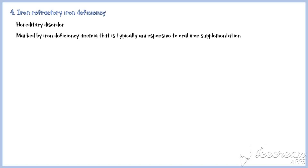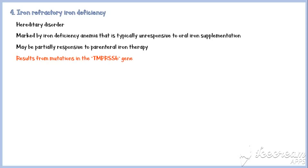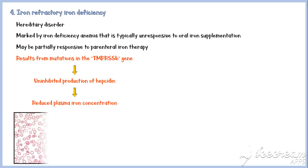This condition may be partially responsive to parenteral iron therapy. It results from mutations in the TMPRSS6 gene, which leads to uninhibited production of hepcidin. As we already know, hepcidin reduces serum iron concentration by inhibiting the action of ferroportin, so increased production of hepcidin results in reduced plasma iron concentration and iron deficiency anemia.